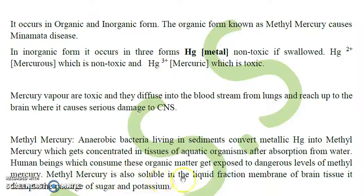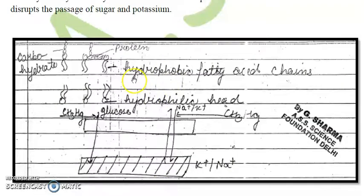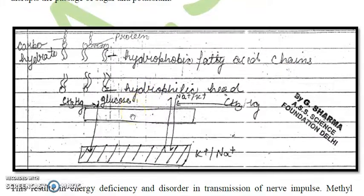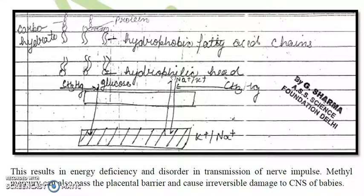Methylmercury is also soluble in the lipid fraction of membranes. In brain tissue, it disrupts the passage of sugars and potassium ions. As shown in the diagram, we have the hydrophilic head and hydrophobic fatty acid chains of the phospholipid bilayer. Methylmercury acts on glucose transport as well as sodium-potassium transport, disrupting the transmission of sugars and potassium ions across brain tissue and neurons.